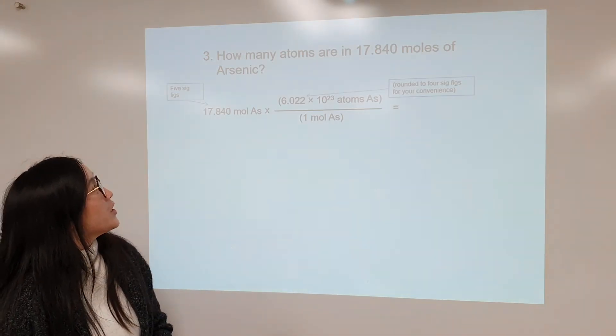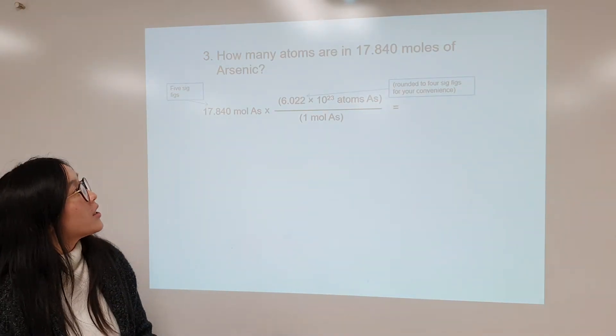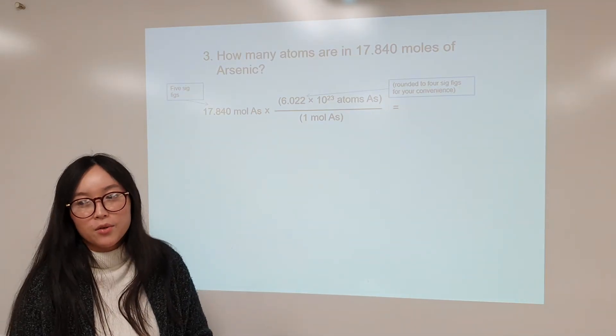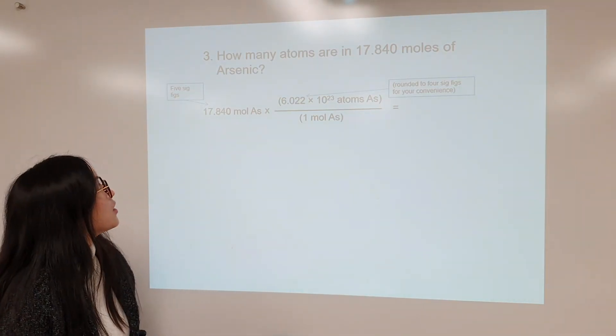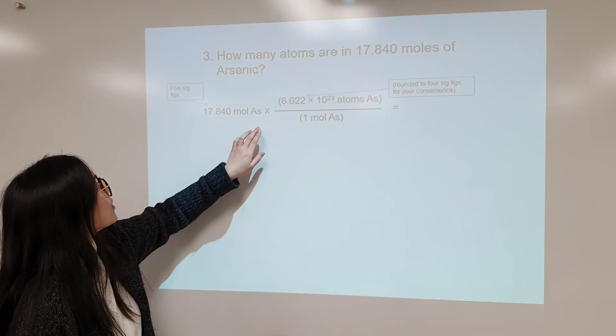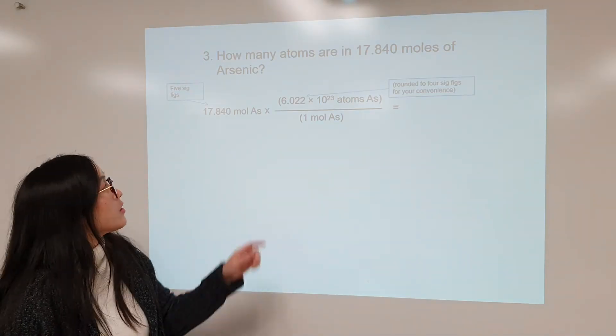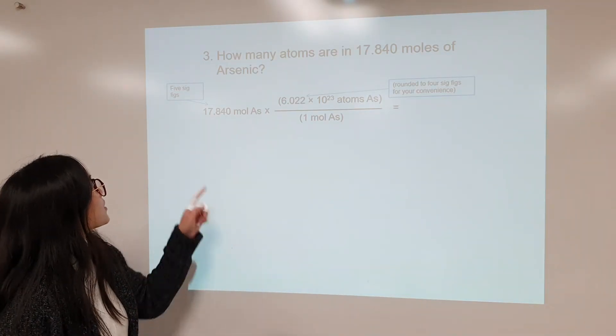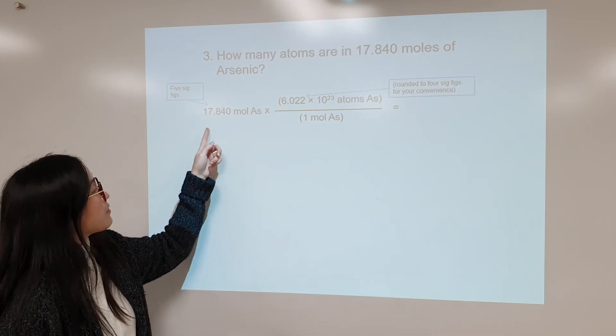So for number 3, how many atoms are in 17.840 moles of arsenic? The symbol for arsenic is As, capital A and lowercase s. And it's 17.840, which has 5 sig figs.